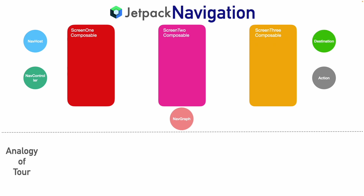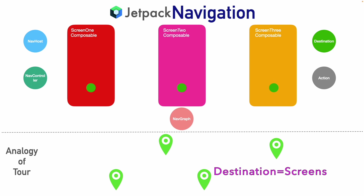Let's start with the most simplest of these terminologies — the first one being destination. In a tour, destinations are basically the cities or the tourist spots that you would like to visit. And if I compare it with programmable screens, destinations are nothing but the screens. Screen one, screen two, screen three are basically the screens on which you want to land as a part of your application navigation.